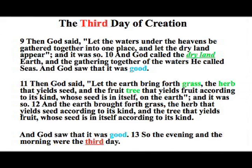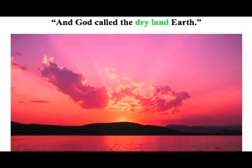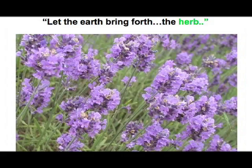Then God said, let the earth bring forth grass, an herb that yields seed, and the fruit tree that yields fruit according to its kind, whose seed is in itself on the earth. And so it was. The earth brought forth grass, the herb that yields seed according to its kind, and the tree that yields fruit whose seed is according to its kind. You see the speciation here that God's giving to things — He makes everything according to its kind. We get distinct species and you don't cross over those. This is the third day, and God saw that it was good. So it was an evening and a morning the third day.